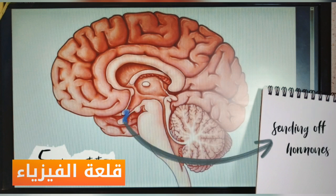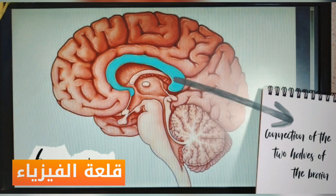Five, the posterior pituitary. It's composed of nerves that help sending off hormones. Six, the corpus callosum. It's a thick band of nerve fibers that connect the two halves of the brain.